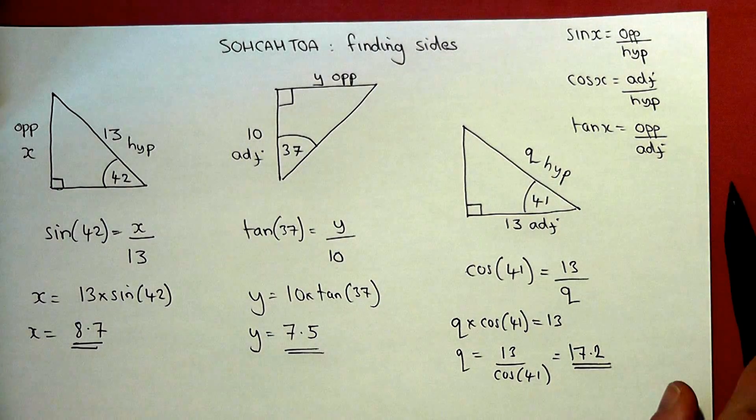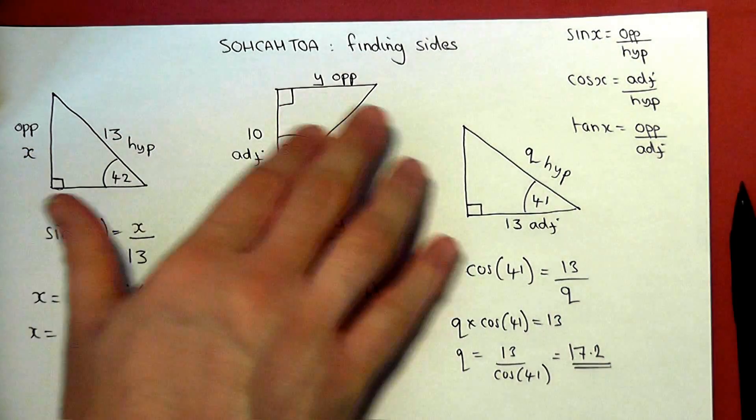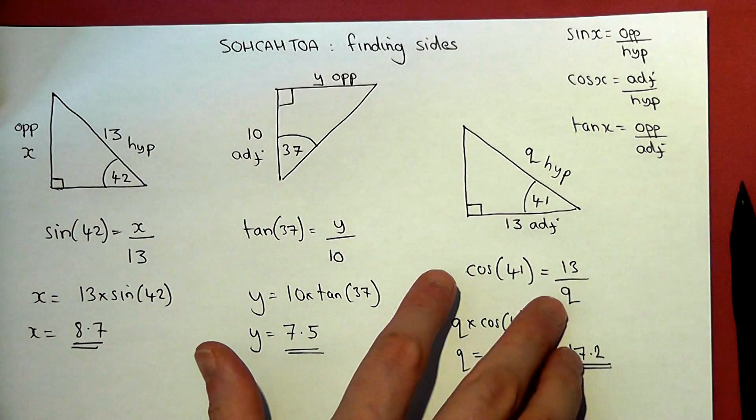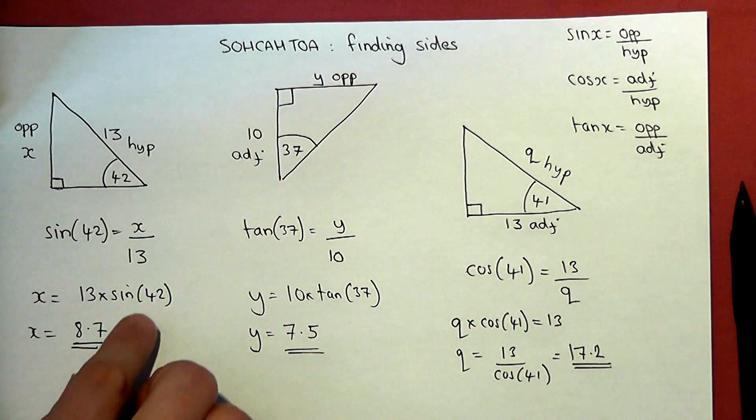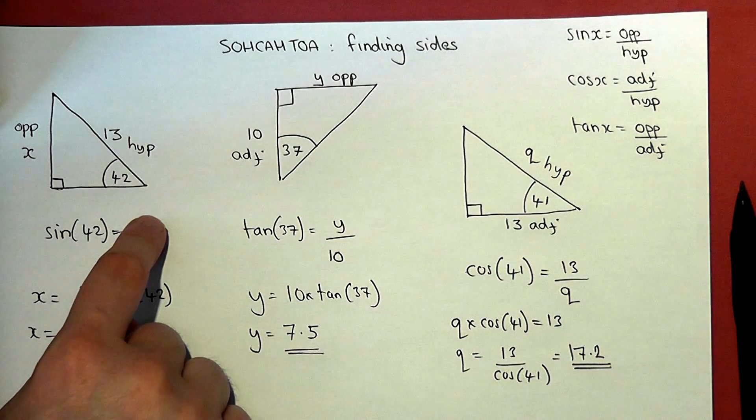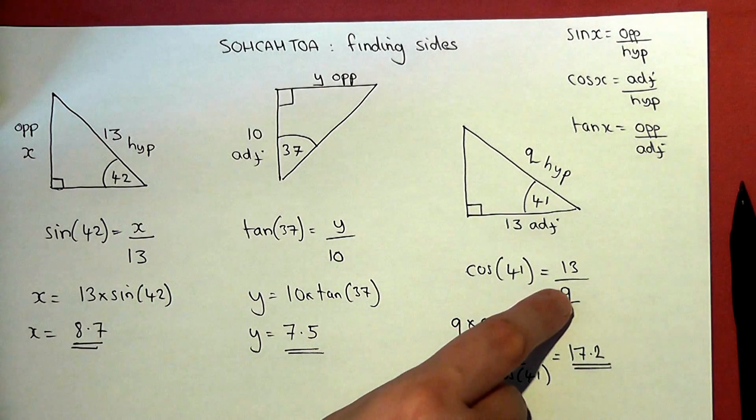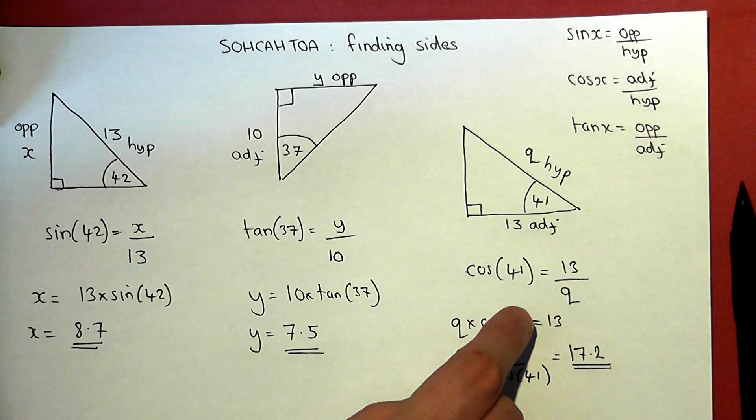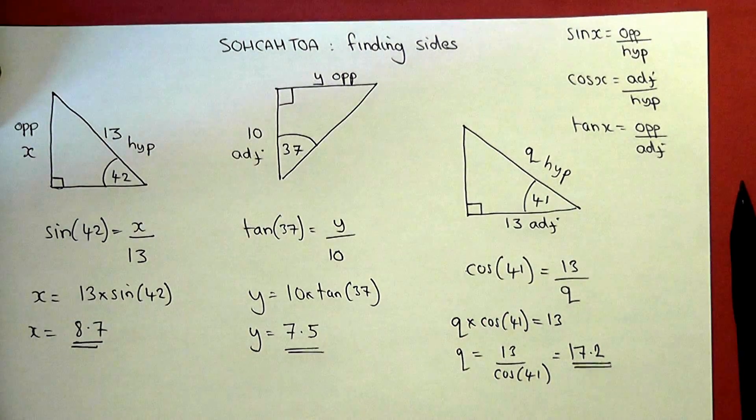The skills are to identify the two sides in the question, to write down the equation, and then to solve it either using the one-step method when the unknown is on top of the equation, or the two-step method when the unknown is beneath the equation. That is SOHCAHTOA, Finding Sides. Thank you.